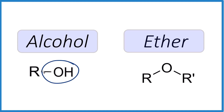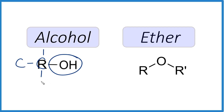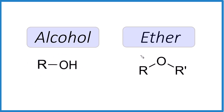...that OH group is on the end of the molecule. This R here just means we have a carbon with hydrogens around it, but it could be a carbon bonded to another carbon. The key is that at the end we have this OH group right here — that's an alcohol.